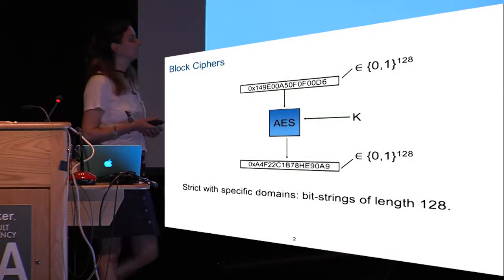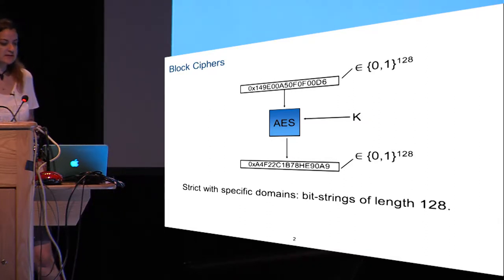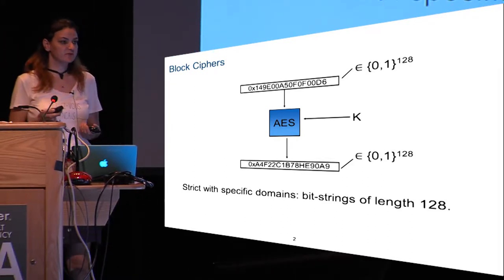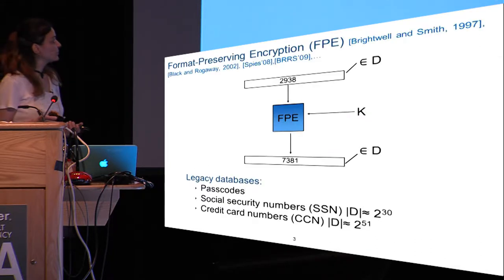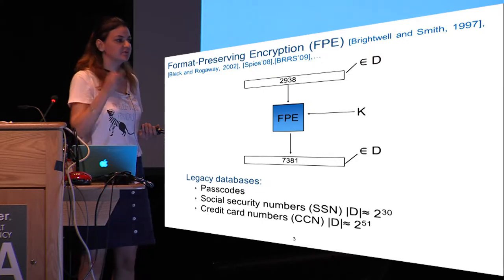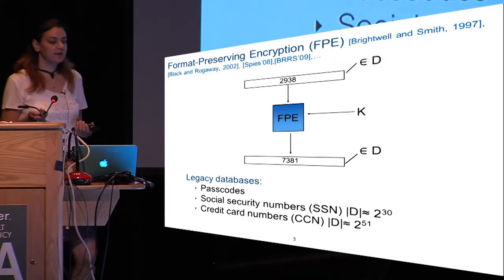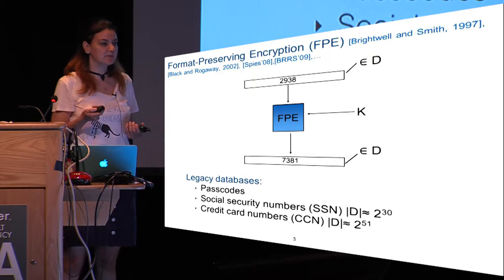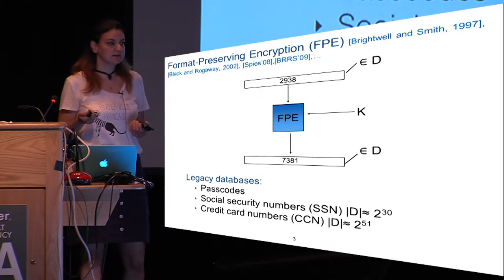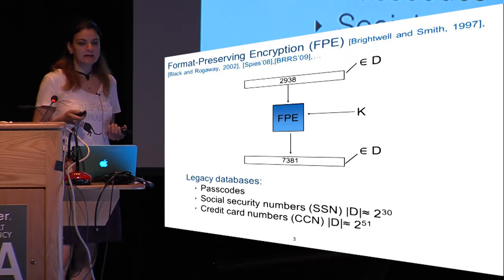Let's start with the concept of a block cipher — for example AES — which encrypts a message of a fixed length, say 128 bits, into the same length ciphertext with a hardwired key. Block ciphers are somewhat rigid because of fixed block lengths, so a new concept called format preserving encryption has been introduced. It's basically a cipher that encrypts a message from a general domain D into the same domain D, and these domains are typically passcodes, social security numbers, or credit card numbers — not binary strings, and much smaller than 128 bits.